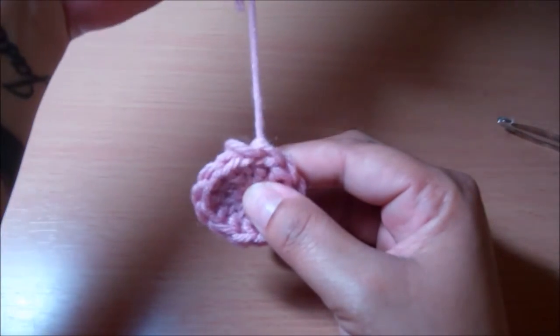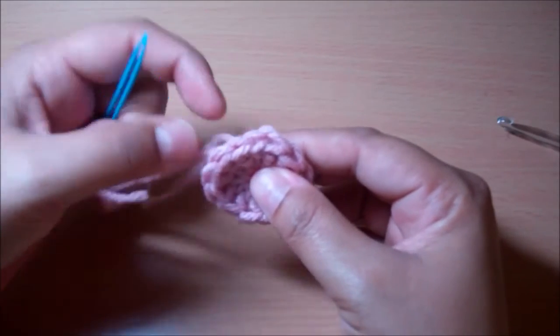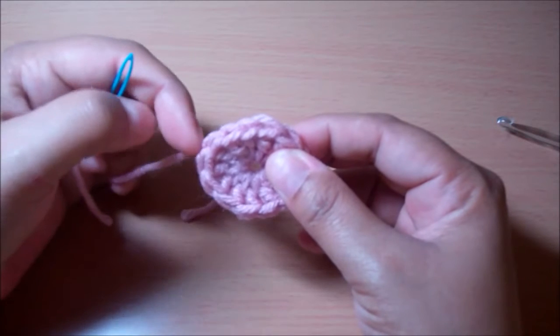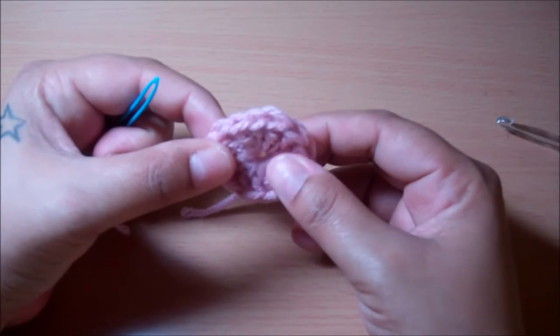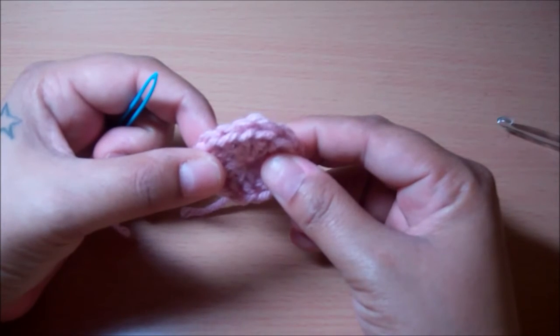And you pull it through. And you pull until it looks just like another one, it's just like this. It looks as though you didn't join at all. And that's how you make the invisible join.